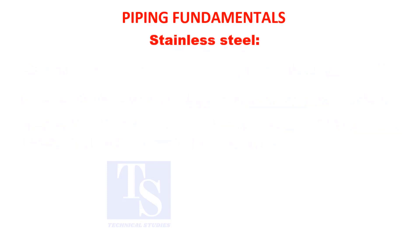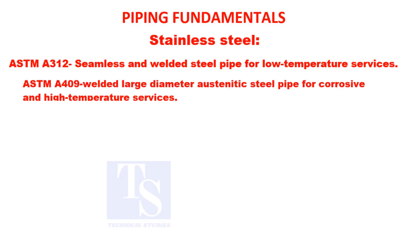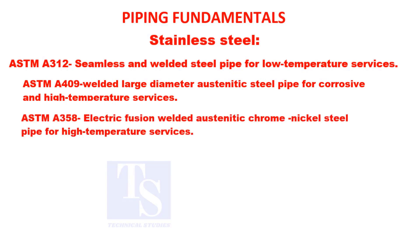Stainless steel ASTM A-312: seamless and welded steel pipe for low temperature services. ASTM A-409: welded, large diameter, austenitic steel pipe for corrosive and high temperature services. ASTM A-358: electric fusion welded austenitic chrome nickel steel pipe for high temperature services.